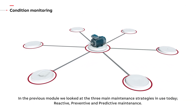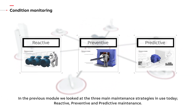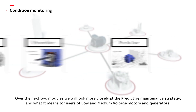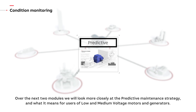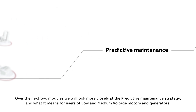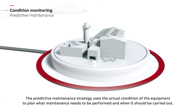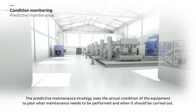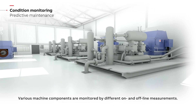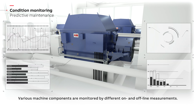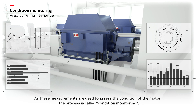In the previous module we looked at the three main maintenance strategies in use today: reactive, preventive, and predictive maintenance. Over the next two modules we will look more closely at the predictive maintenance strategy and what it means for users of low and medium voltage motors and generators. The predictive maintenance strategy uses the actual condition of the equipment to plan what maintenance needs to be performed and when. Various machine components are monitored by different on and offline measurements to assess the condition of the motor — a process called condition monitoring.